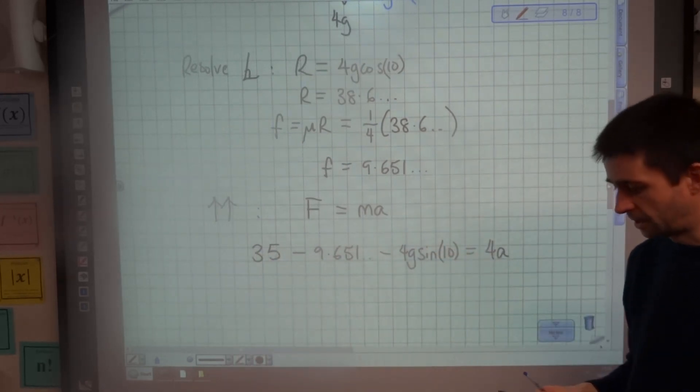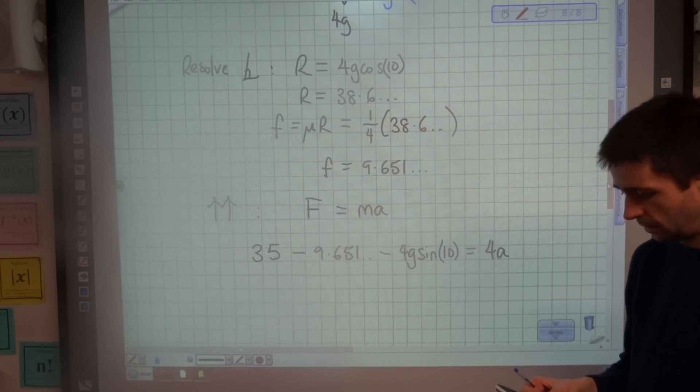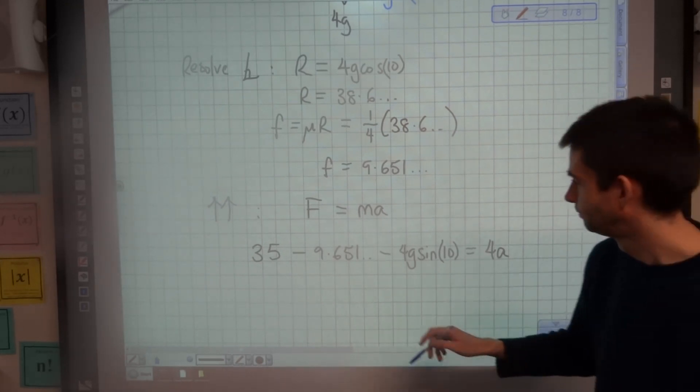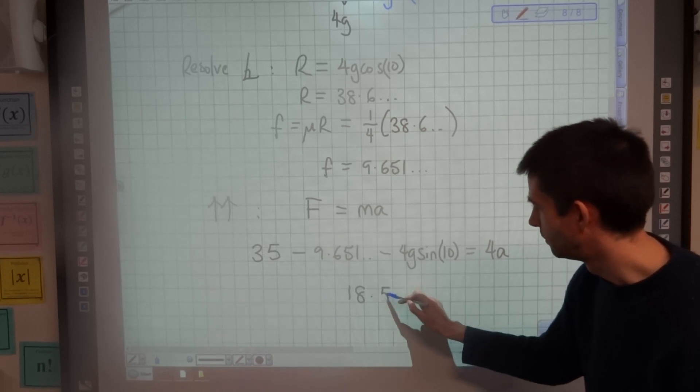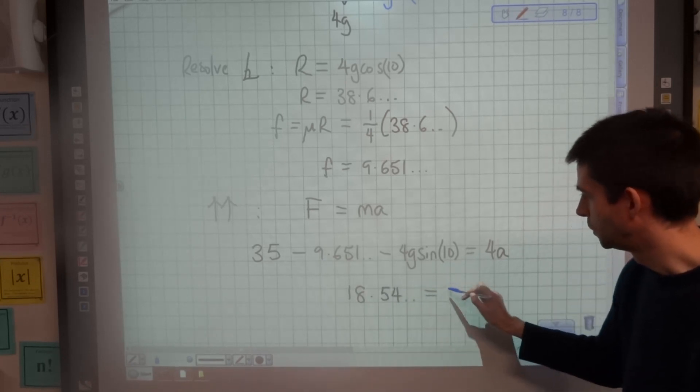So I can now work all this out as a number. So 35 minus my friction minus 4 times 9.8 times sin 10 comes out as 18.54 equals 4A.